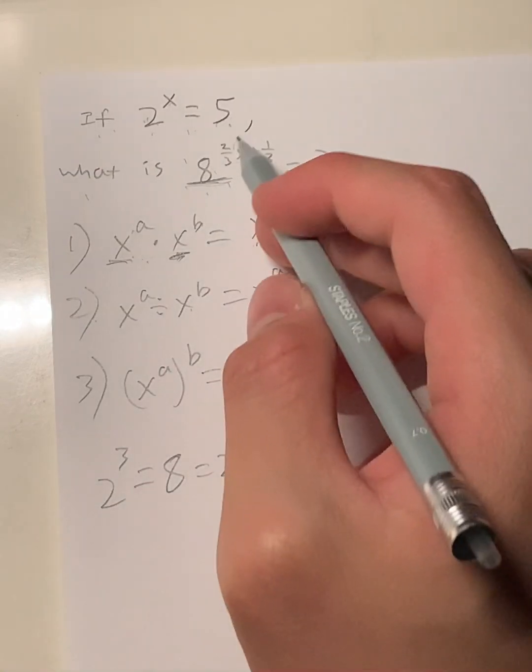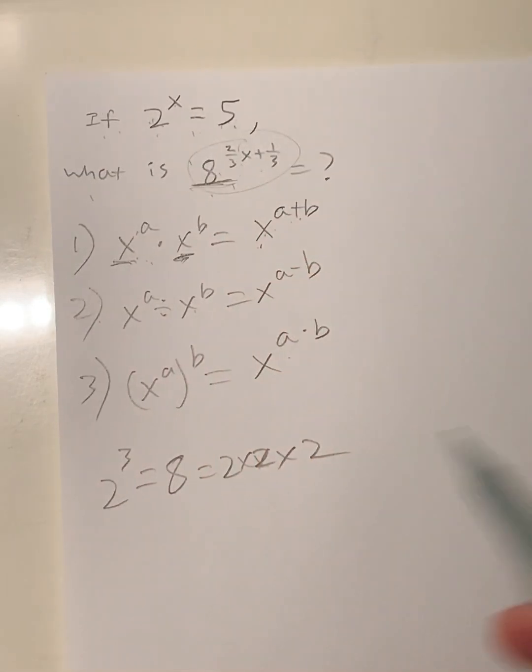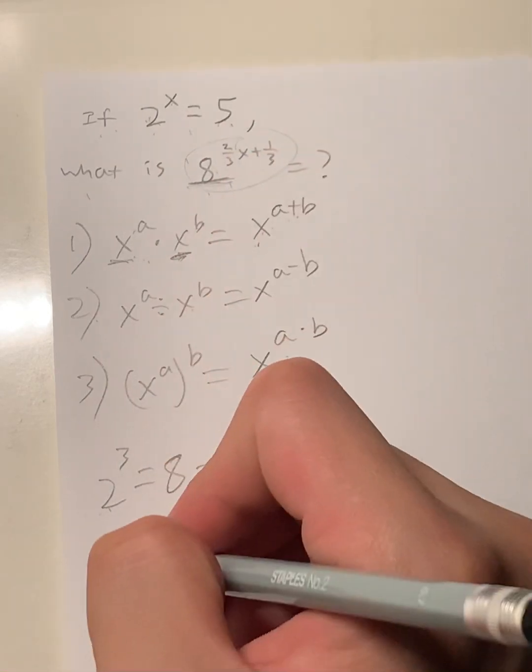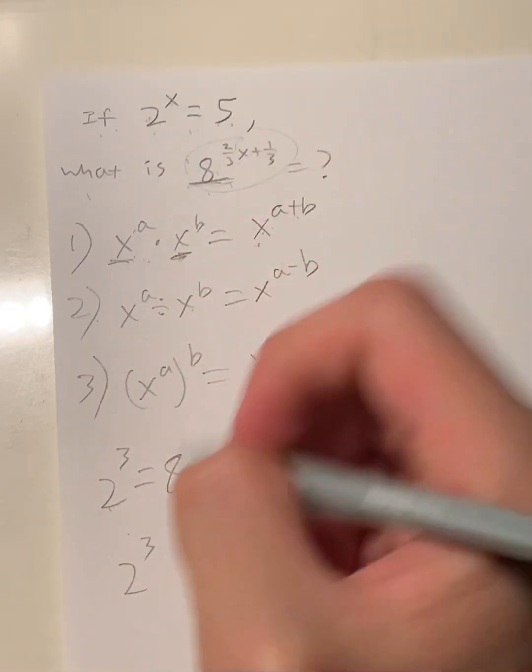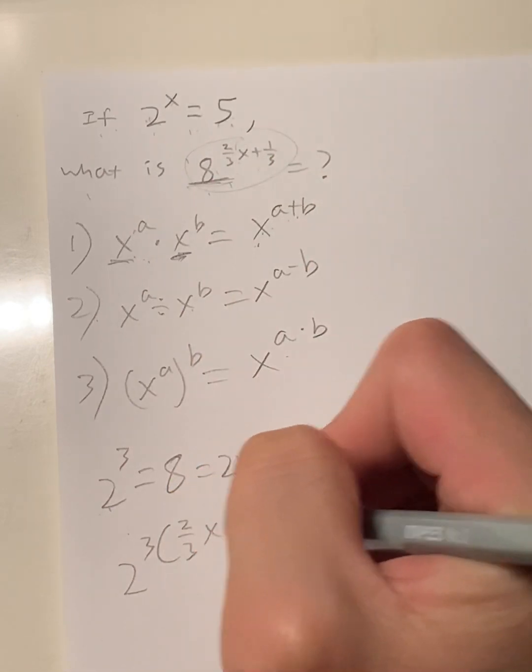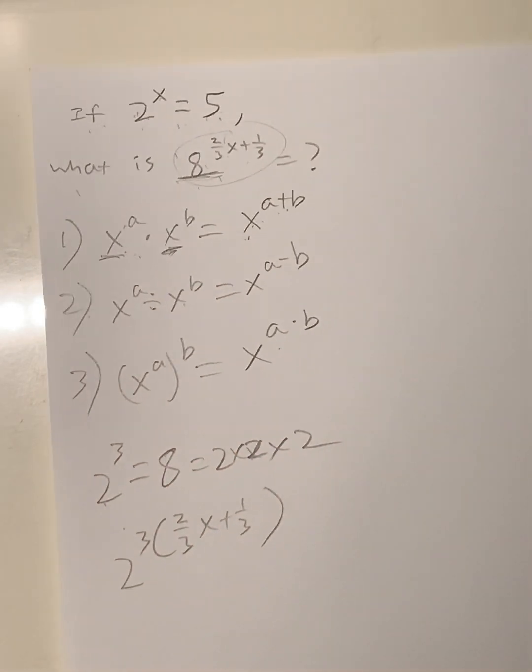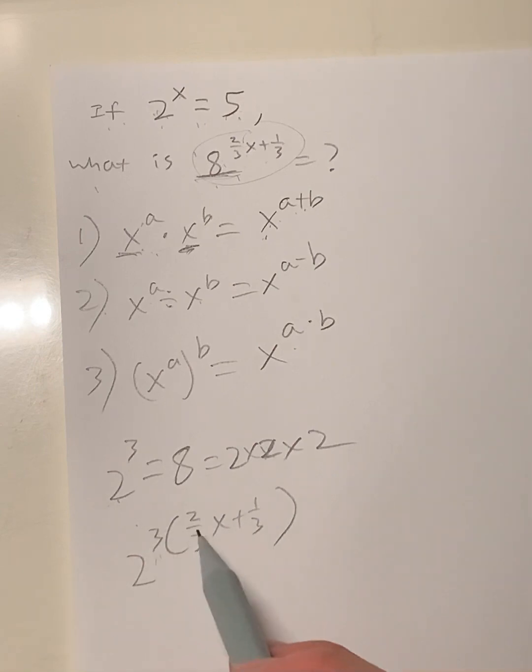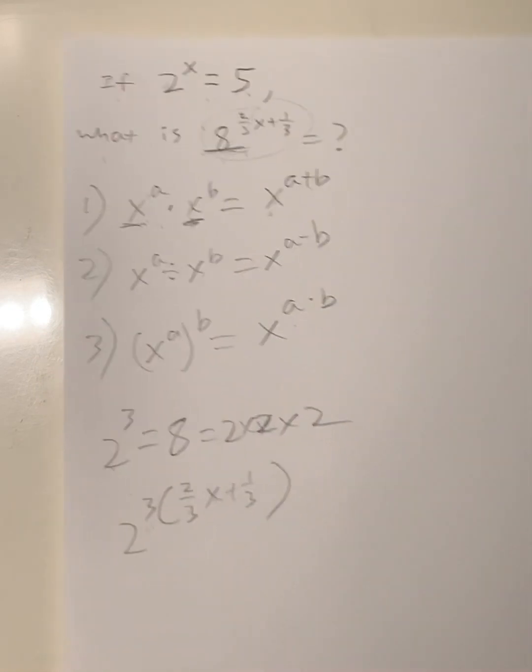Let's rewrite this 8^(2x/3 + 1/3) in terms of 2. So this is equal to (2^3)^(2x/3 + 1/3). And now let's multiply out three times 2x/3 plus one third. So this simplifies to what?